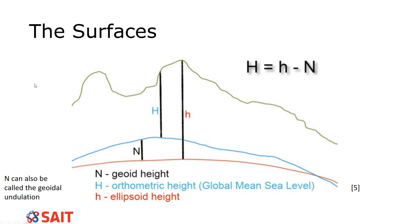We use that ellipsoidal surface with GPS, and then we convert it to mean sea level, because that's what most people want to see. To do that conversion, we use N, which is my geoid height, also known as geoidal undulation. The geoidal undulation is trying to be 90 degrees to both surfaces. So we have orthometric height to mean sea level, ellipsoidal height down to the ellipsoid, and the difference between them is the geoid height or geoidal undulation.